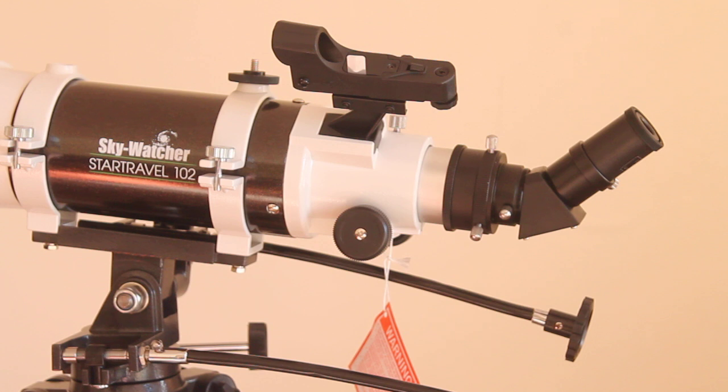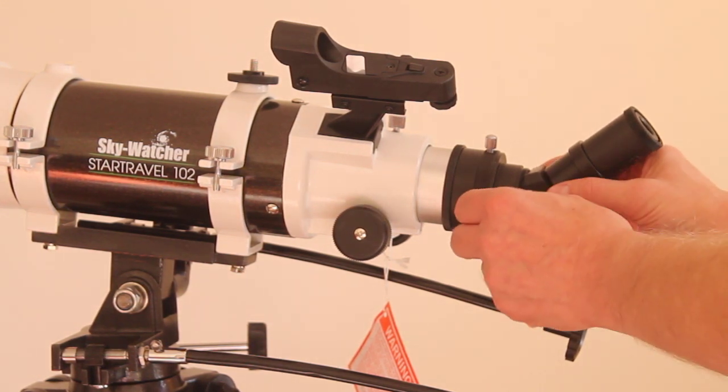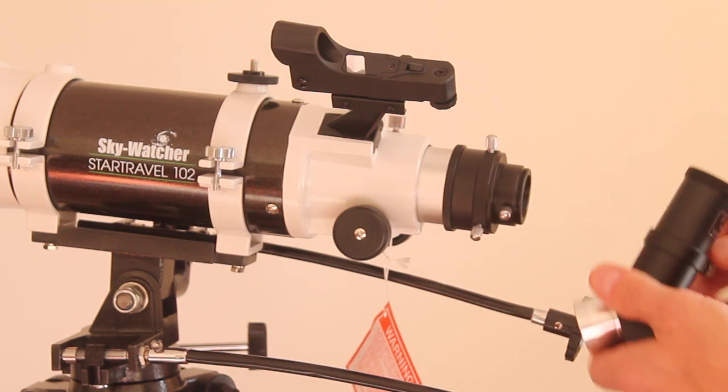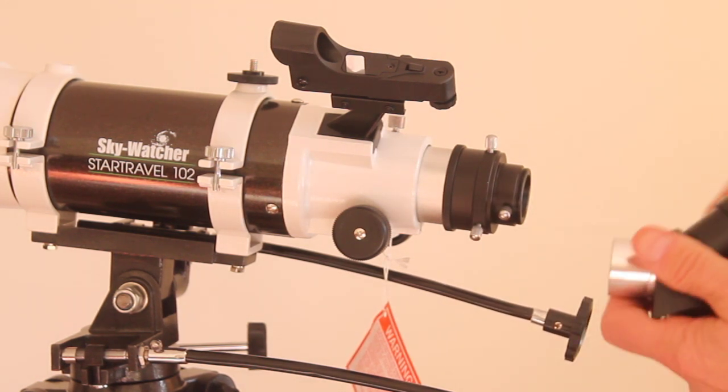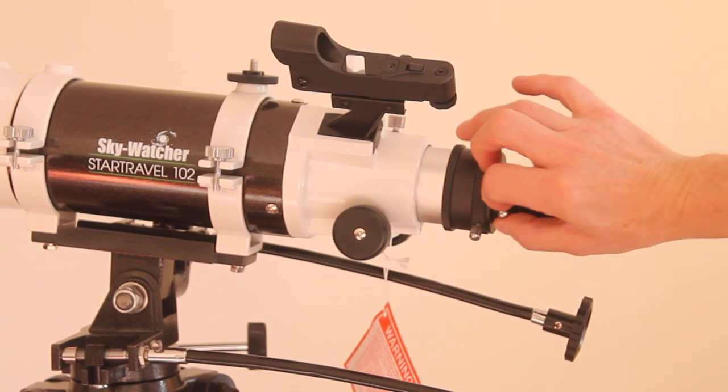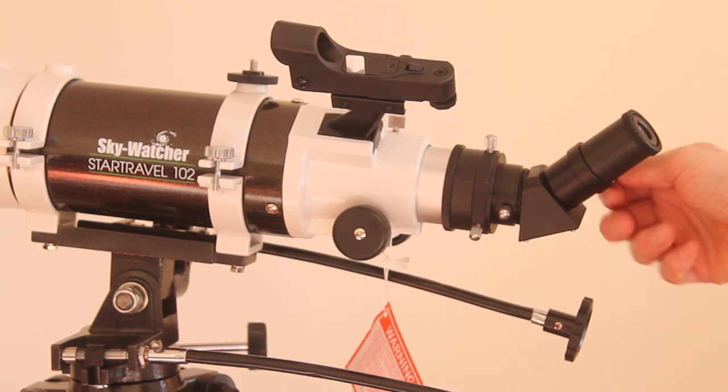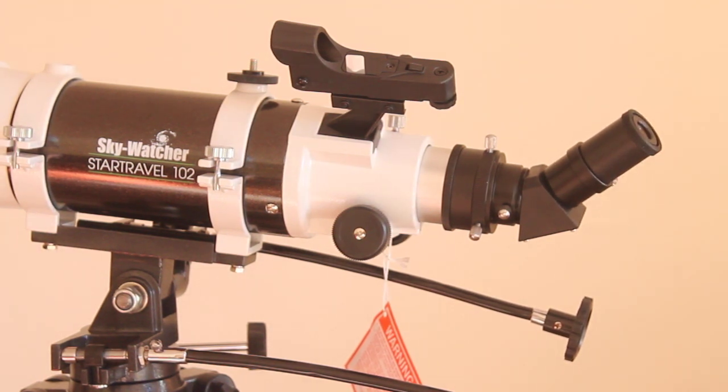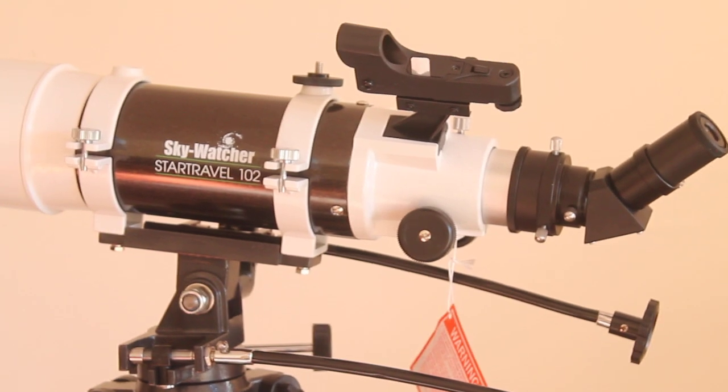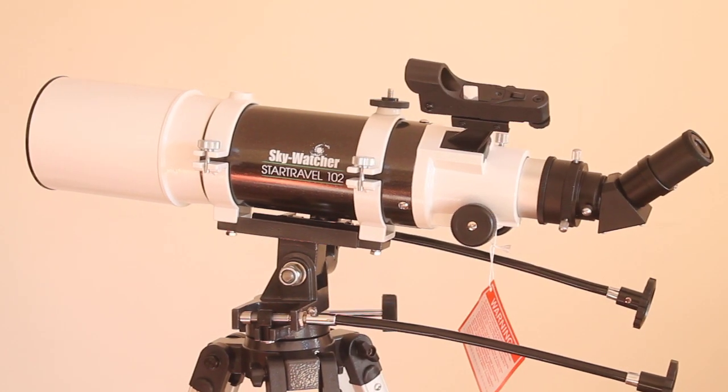Just a quick rundown to put everything together. You have the diagonal that goes in like that, screw it in, and then you put the eyepiece in like that. Apologies if you already know that. Some people watching this for the first time won't know how to put an eyepiece in, and I'm happy to help with that.